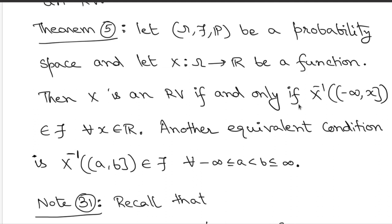Since intervals of the form (−∞, x] generate the Borel sigma field on the real line, if all such pre-images are in F, then X is measurable. Conversely, if X is measurable, all such pre-images are in F — so this is an if and only if condition. You can also use other generating sets, for example left-open right-closed intervals (a, b] for a < b, or a, b possibly equal to ±∞. If pre-images of such sets are in F, then X is a random variable. These equivalent conditions help identify measurable structures.